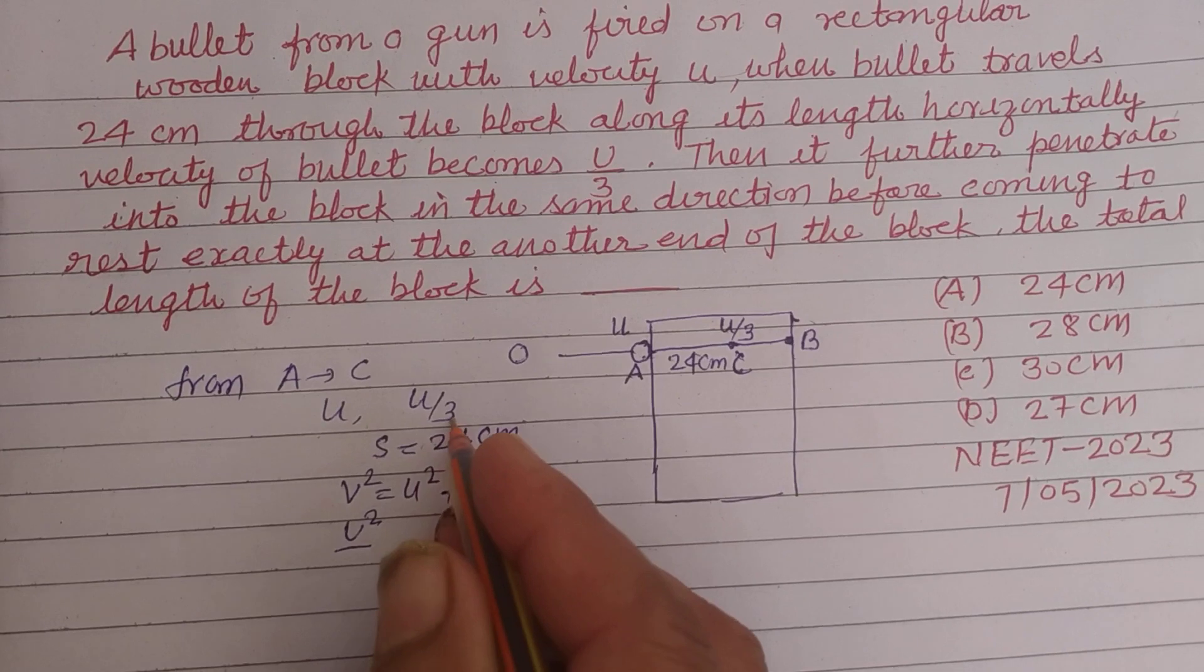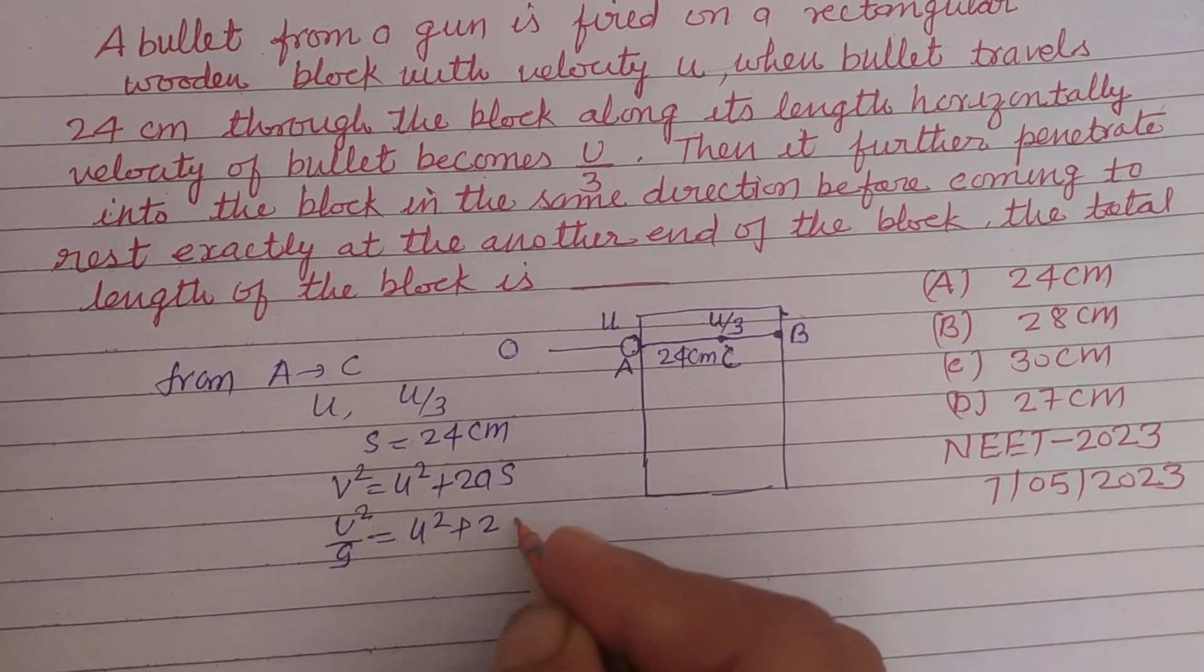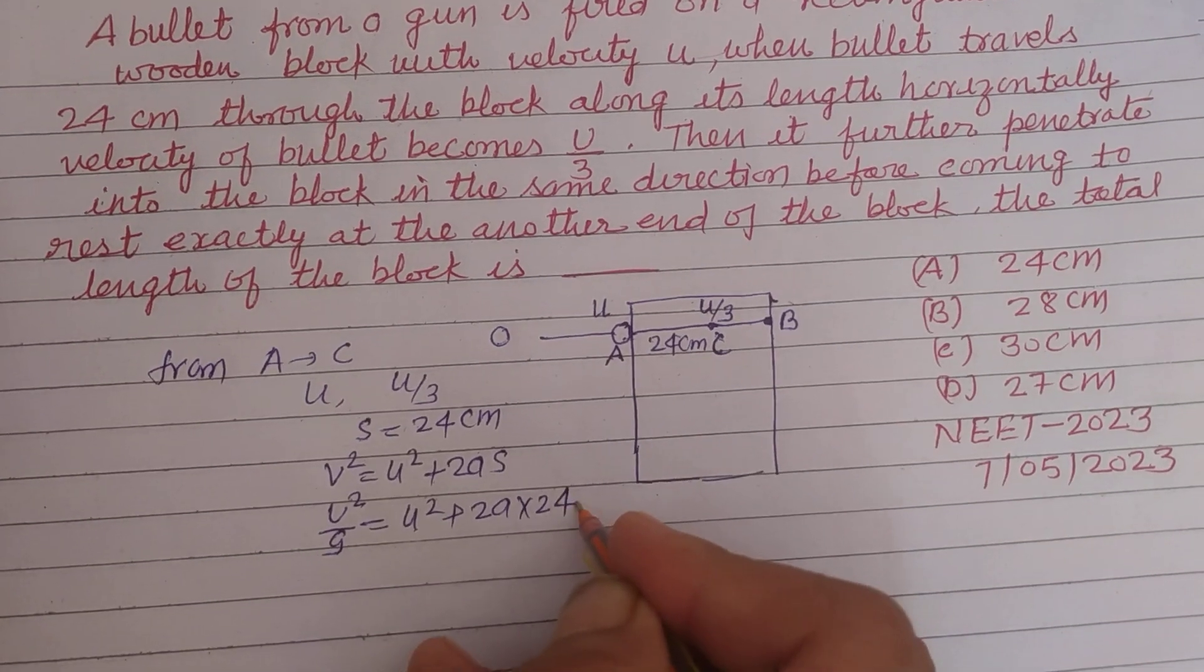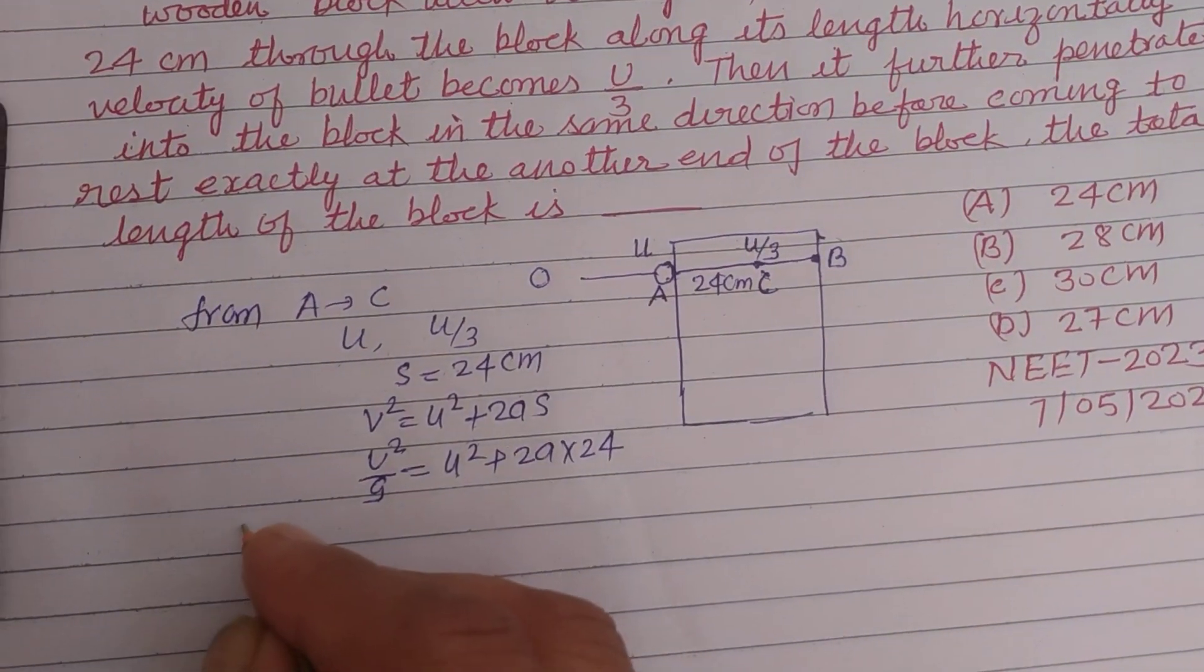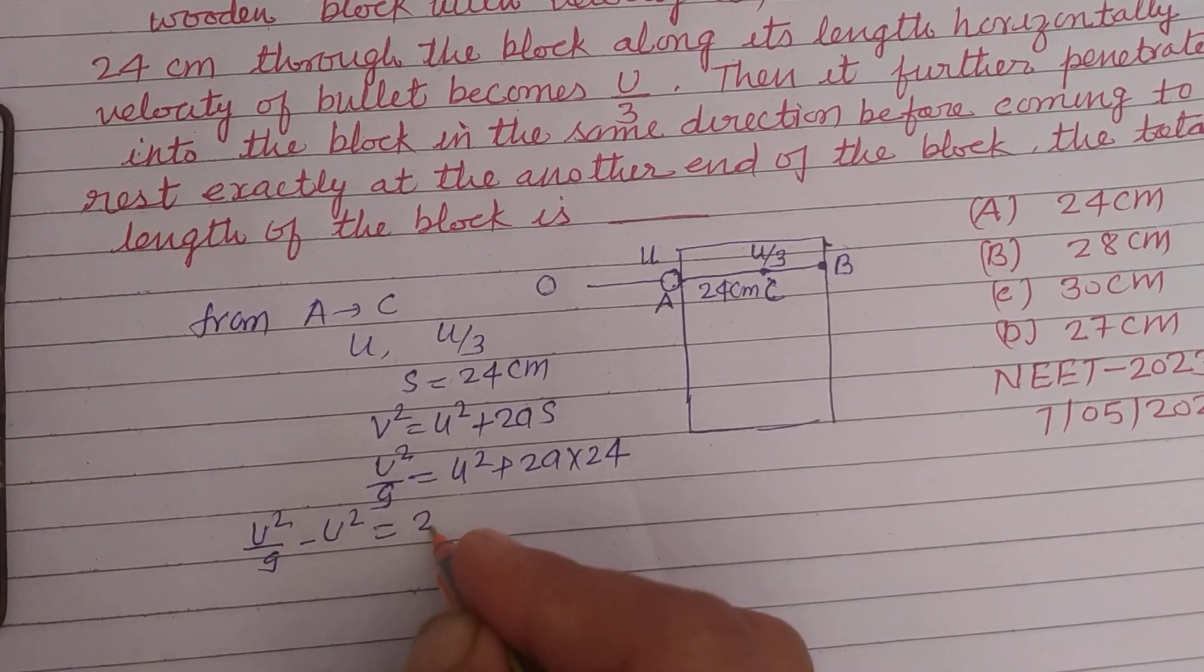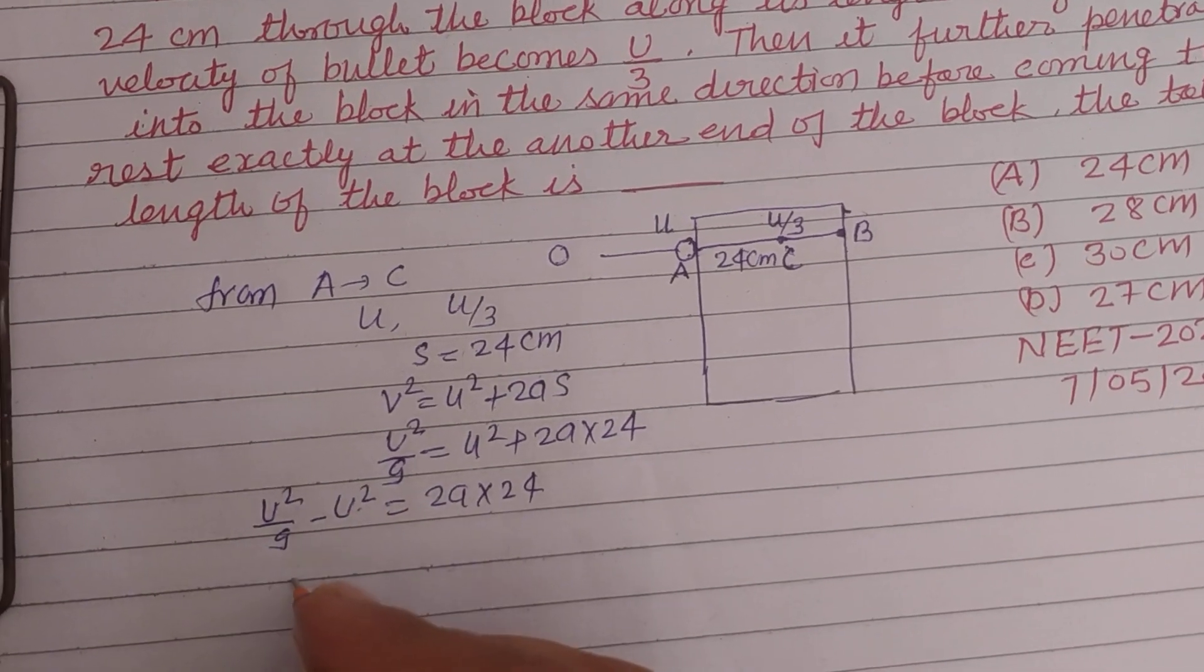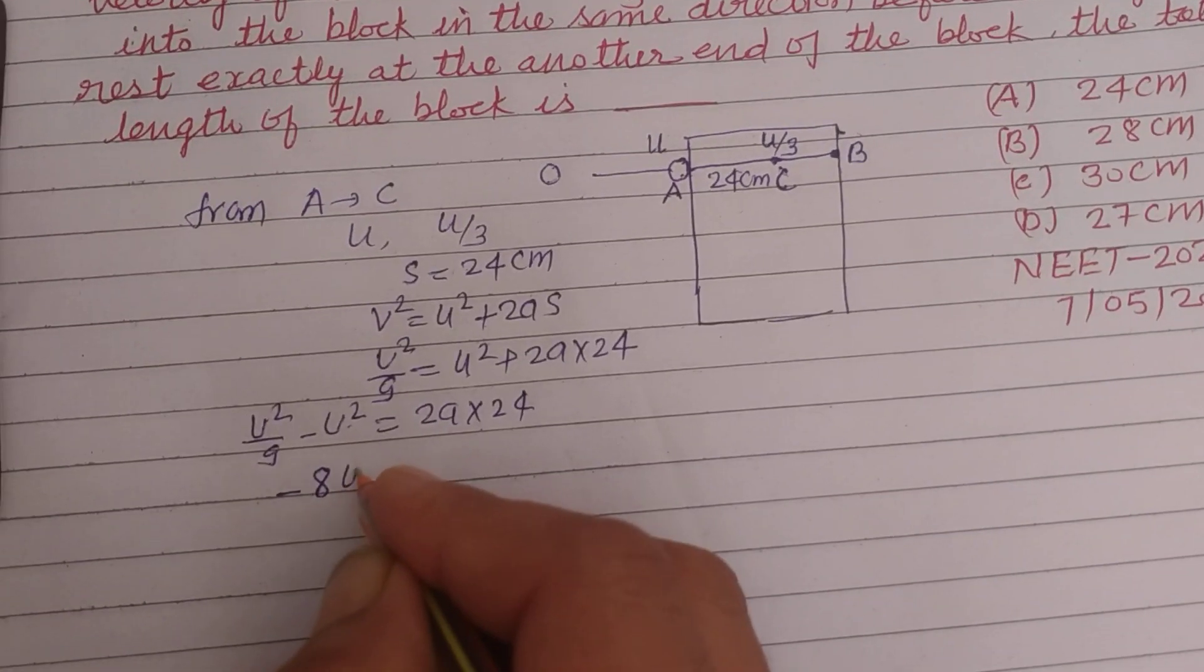U by 3 squared is U² by 9, and this is U² plus 2as is 24. So U² by 9 minus U² equals 2a into 24.